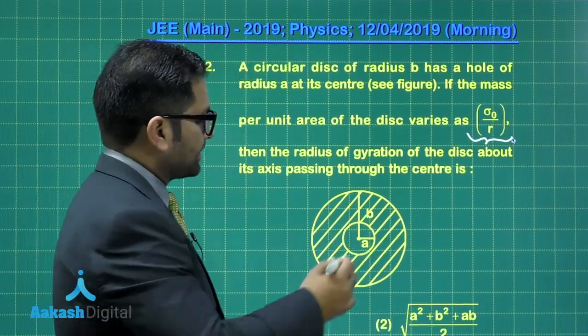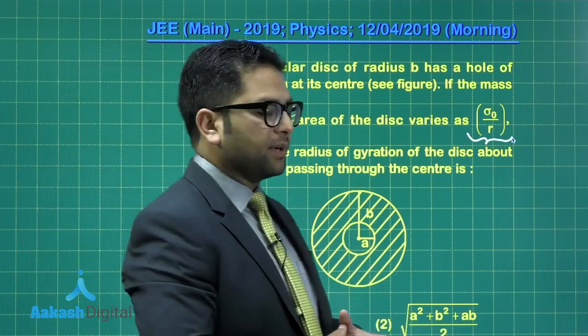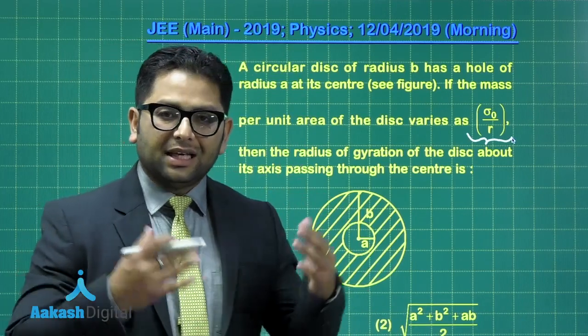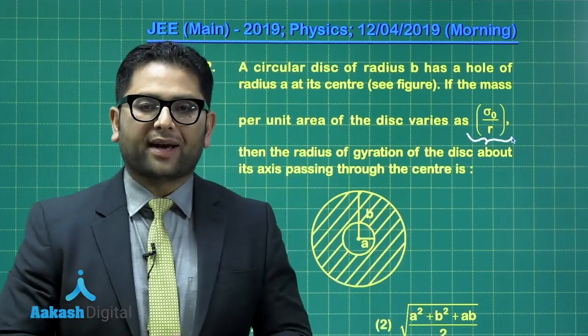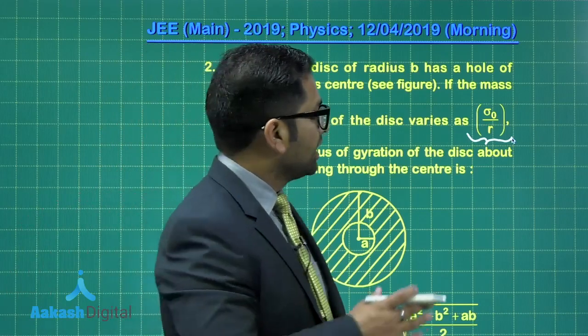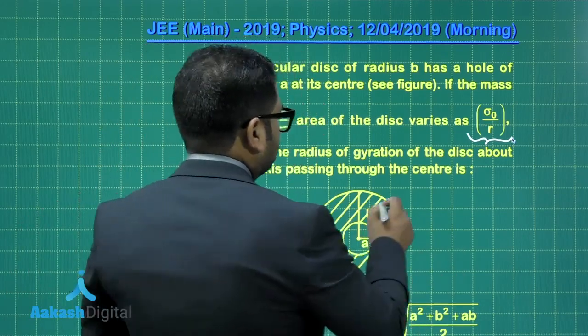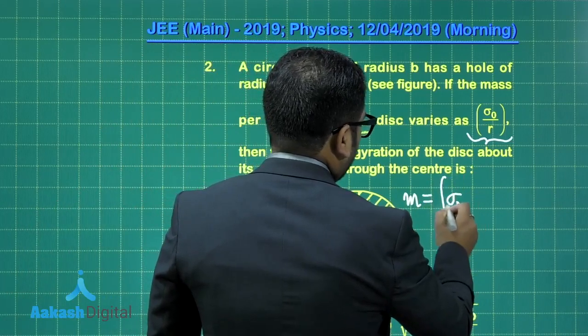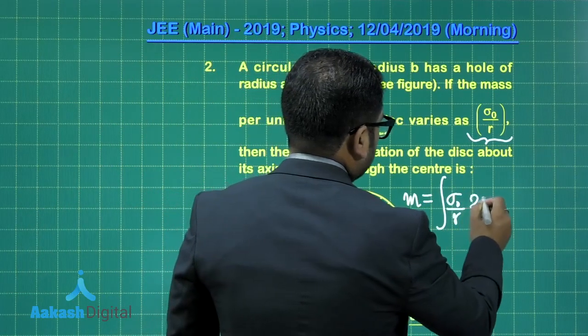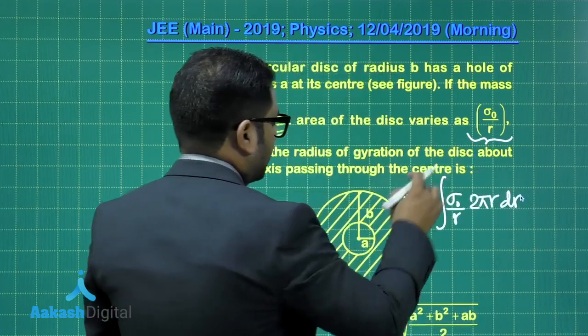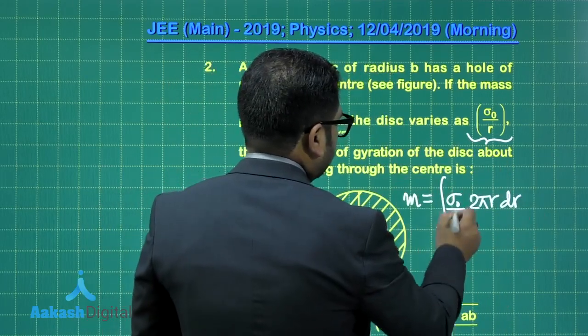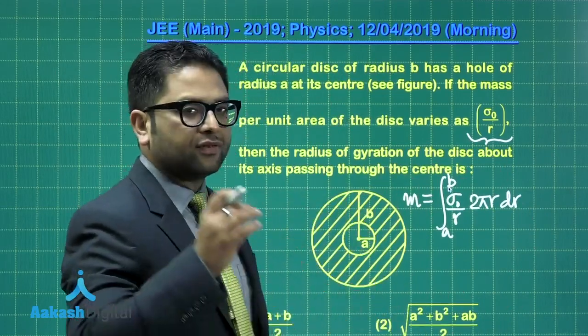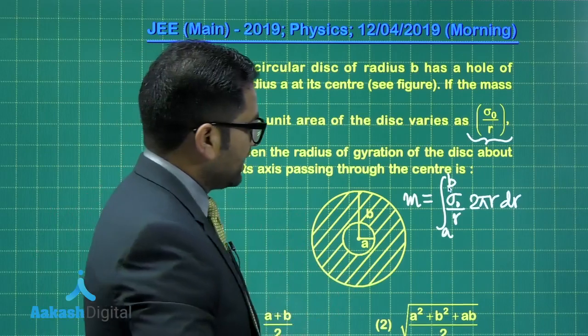So here, that's an axis. The strategy would be, we need to calculate the moment of inertia, and then equate it to mk squared, k being the radius of gyration. So first, if I would calculate m, the mass, that's going to be sigma naught by r is the surface density into 2 pi r dr, the infinitesimal area. The limit will be from A to B. So this equation will be giving me the value of mass of the disk.